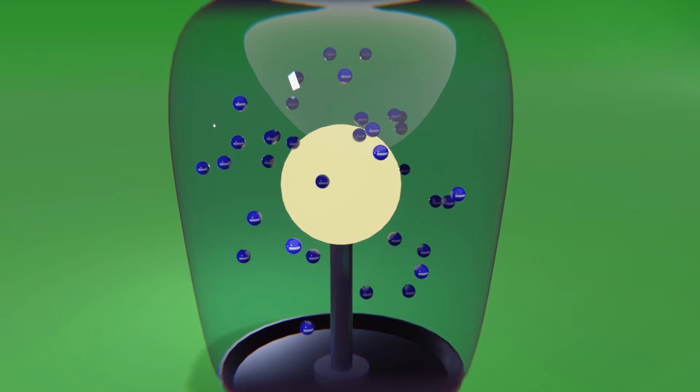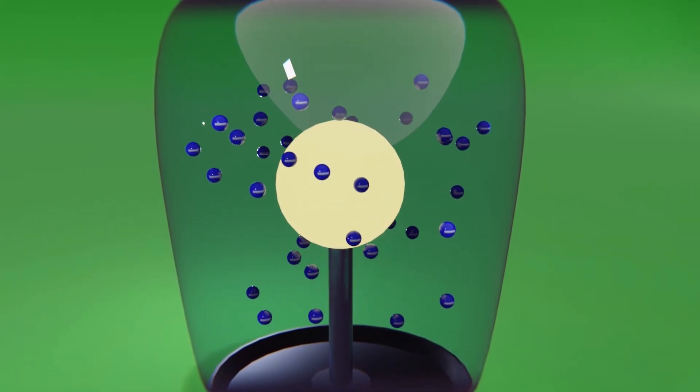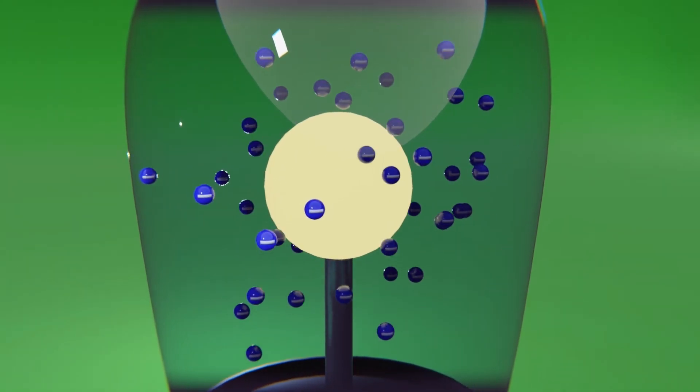This happens because, at the atomic level there are electrons which are negatively charged, that can move and in this particular case, when excited by heat, they are released from the material in the form of ions.